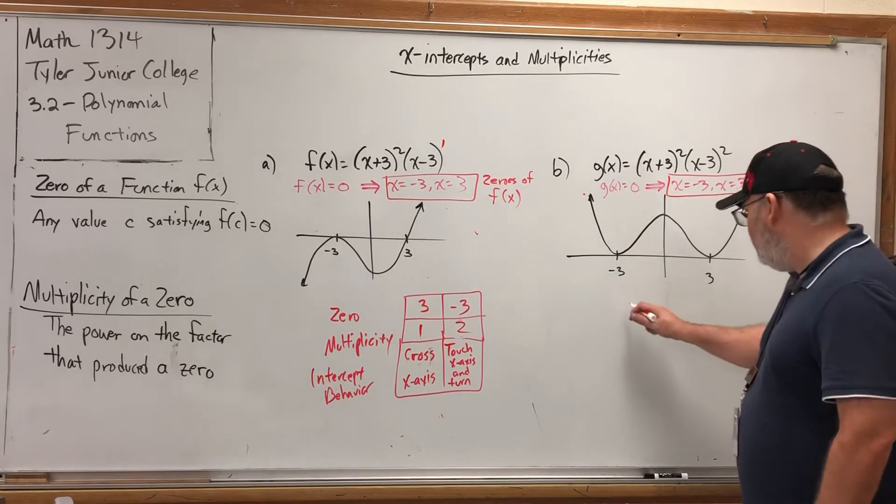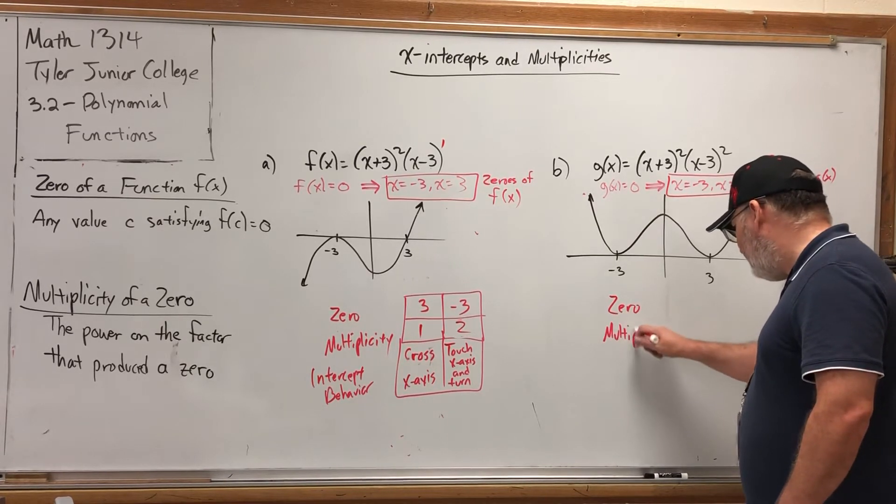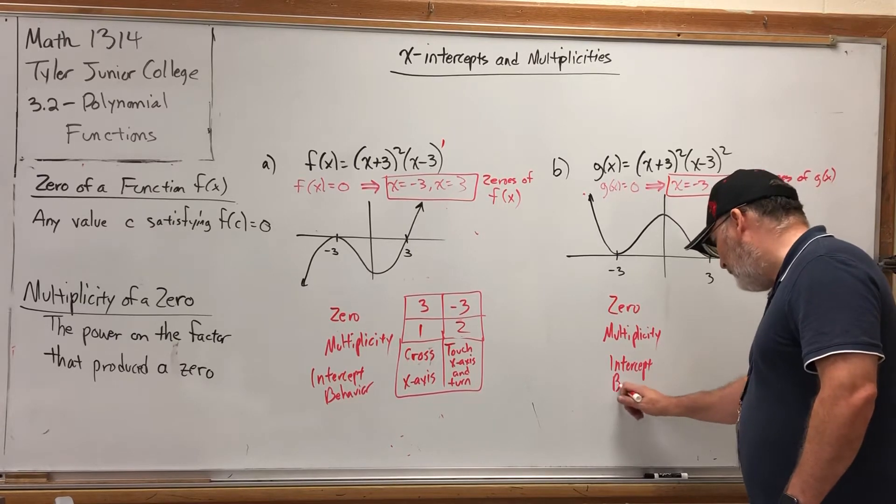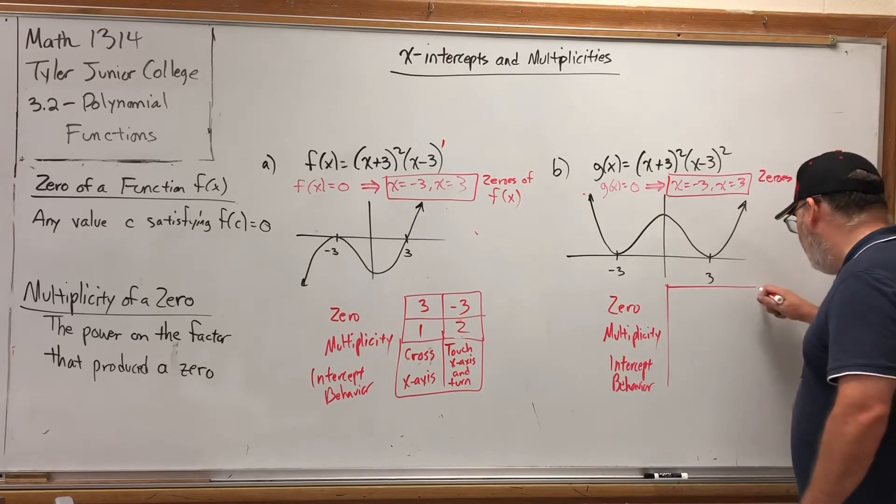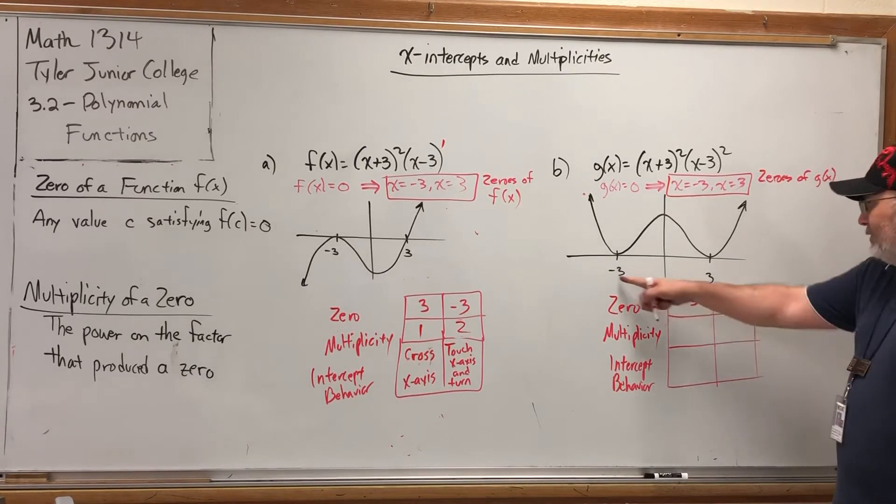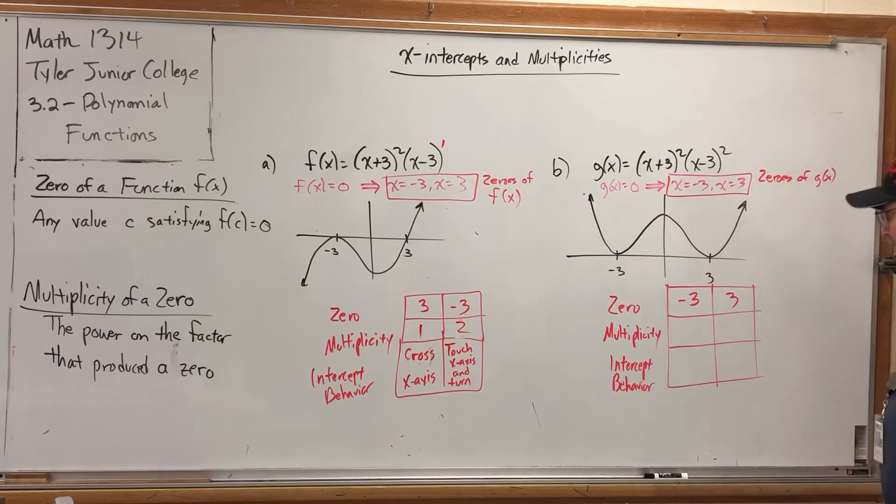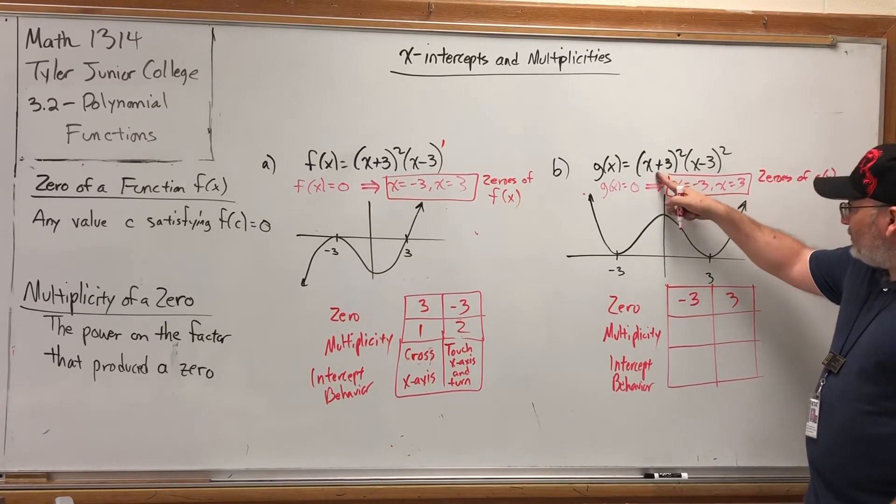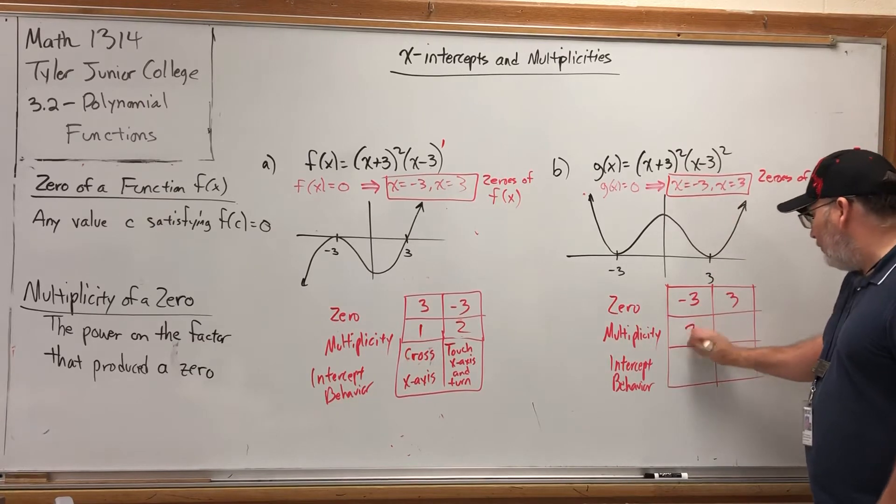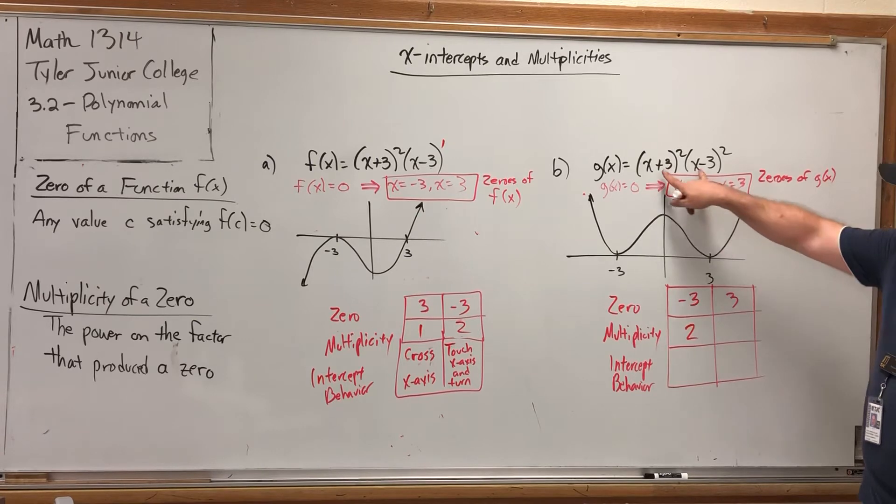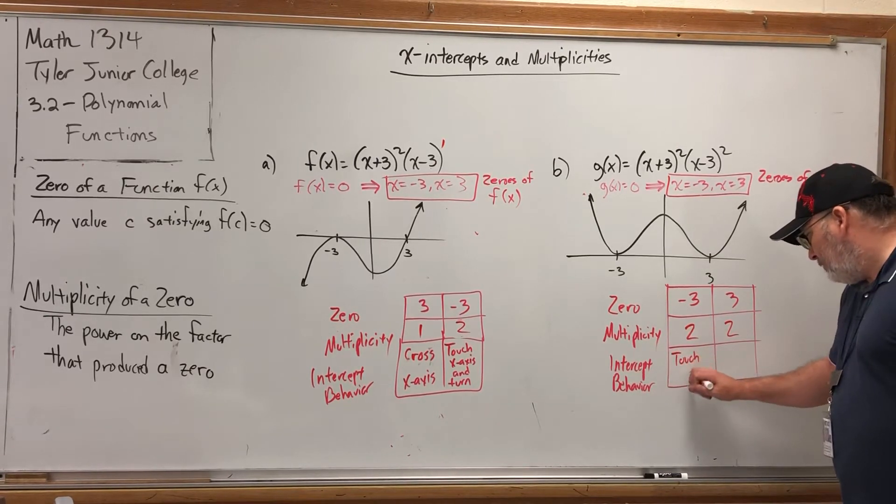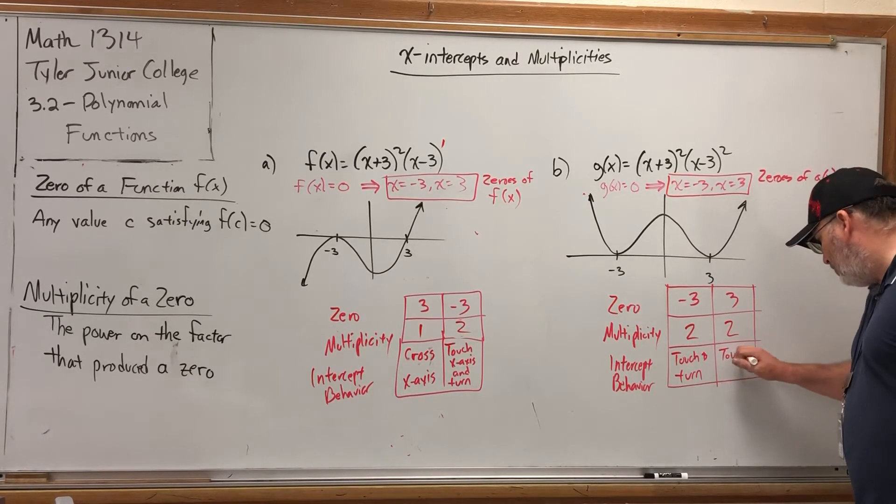Let's do the same thing over here. List the zero, list the multiplicity, and then state the intercept behavior. Intercept behavior is my own phrase, but I call it that to liken it to end behavior. How do the ends behave? How do the x-intercepts behave? I think this time I'll put negative three first and three second, since that's the order they're in here. And the order they're in here, it's irrelevant. So let's start with negative three. That zero came from this factor that had a power of two. Since the multiplicity is the factor on the power that produces a zero, the multiplicity of negative three is two. In fact, both of these multiplicities are two, because both of these zeros came from factors whose powers were two. And what's the intercept behavior on both of them? They both touch the x-axis and turn. So we'll just say touch and turn for brevity. Touch and turn.